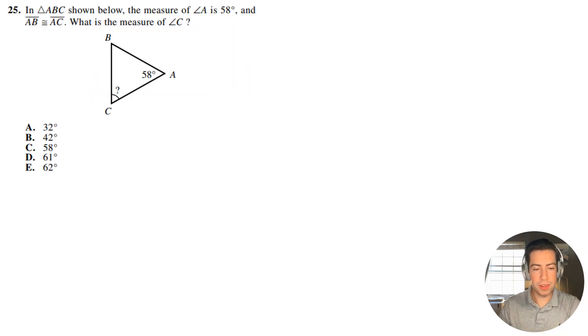Question number 25. Let's get right into it. So we're given this triangle here, and it says, in triangle ABC shown below, the measure of angle A is 58, and the side length AB is congruent with the side length AC. What is the measure of angle C?